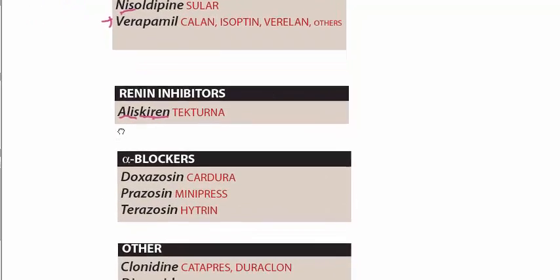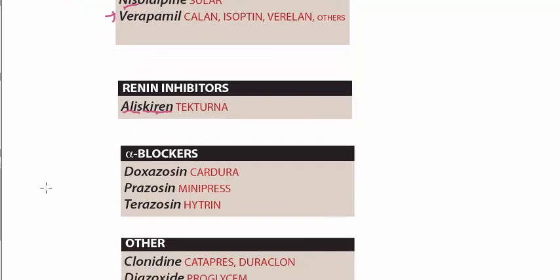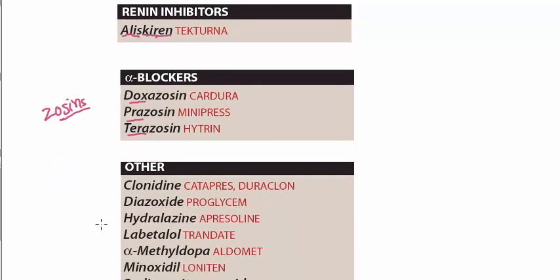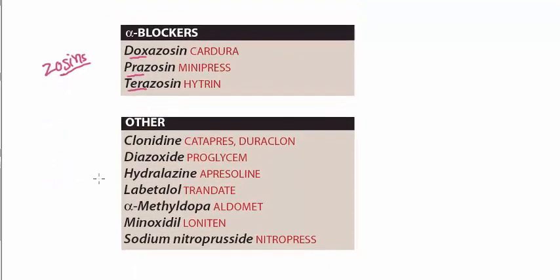And in the alpha blockers we have -zosins. In the -zosins we have doxazosin, prazosin, and terazosin. In the others category we have drugs like clonidine.